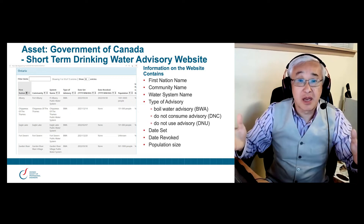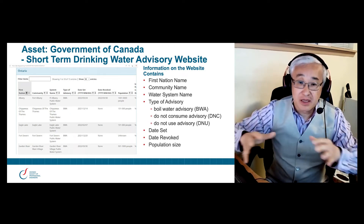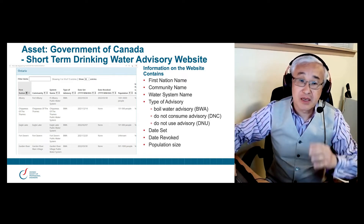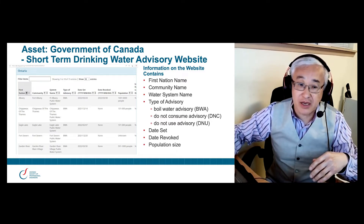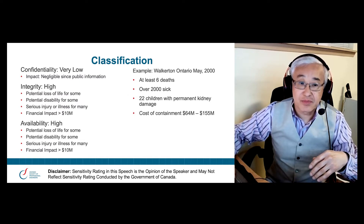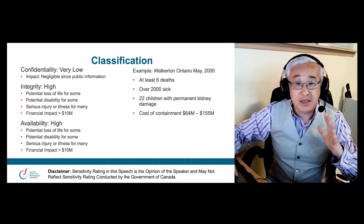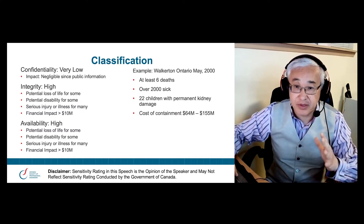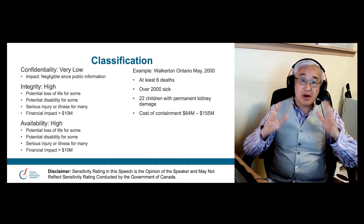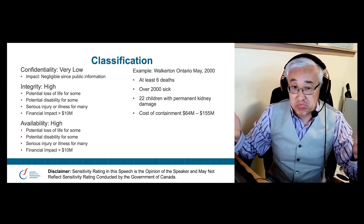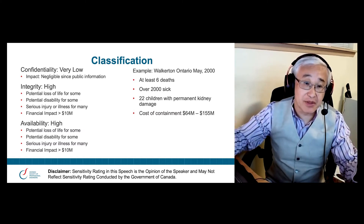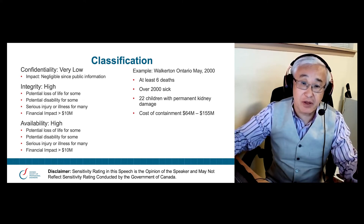So this is an example of an informational asset — this set of data. How would we classify something like this? First, let's take a look at it from a confidentiality perspective. Because this is public information — information that needs to be in front of the public — the confidentiality level is very low. It's public information.